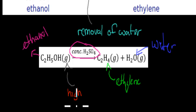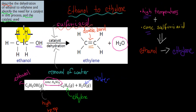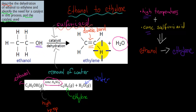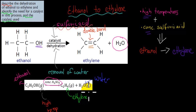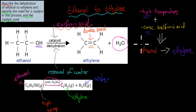It wouldn't actually go from ethanol into ethylene unless it's in gas form. So to summarise: we have an ethanol molecule, and in the presence of concentrated sulfuric acid as catalyst, we go from ethanol into ethylene — a dehydration reaction where we lose a water molecule. The chemical equation is C2H5OH (gas) in the presence of concentrated sulfuric acid turning into ethylene and water. The catalyst speeds up the reaction, and without it the reaction wouldn't go ahead.